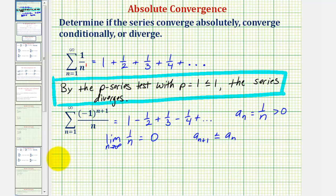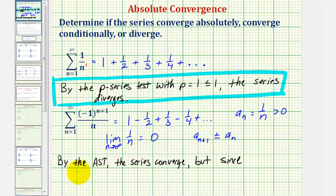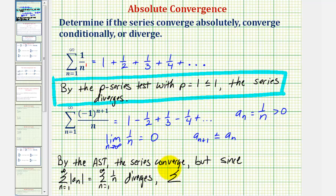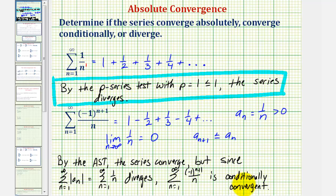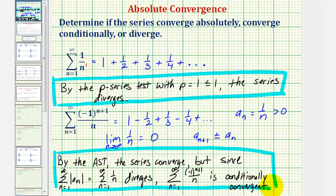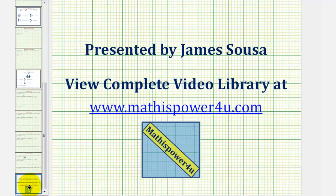To summarize: by the alternating series test, the series converges. But since the summation of the absolute value of a sub n, which equals the summation of one divided by n, diverges by the p-series test, the alternating series is conditionally convergent. If that series had been convergent, the alternating series would be absolutely convergent. But in this case, because the summation of the absolute value of a sub n is divergent, we have a conditionally convergent alternating series. I hope you found this helpful. Thank you.